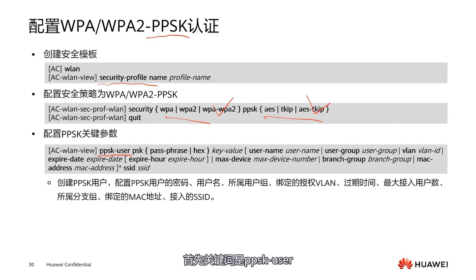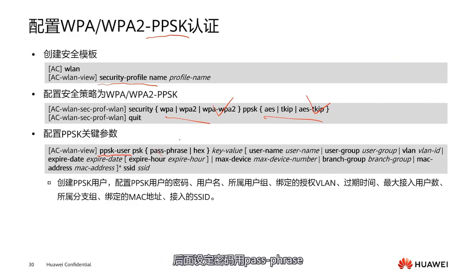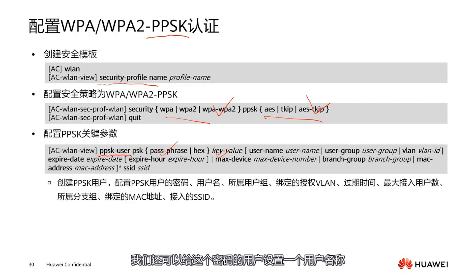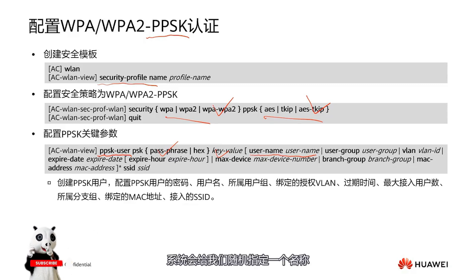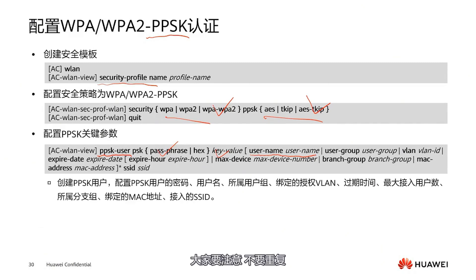Let's see how to configure it. The keyword is EPSK user — we differentiate users here. Then set a password using passphrase. This key value is our password. If we want, we can also give this password's user a username; if not, the system will randomly assign a name. If you set a username, make sure it is not repeated. You can also bind to a user group and bind to the user's VLAN.